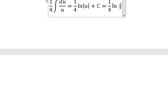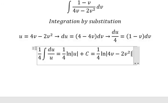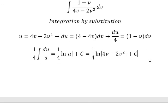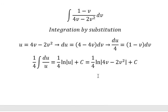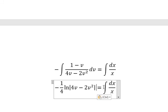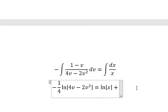For u, that is 4v - 2v². Now we go back here. The integration of this one is (1/4)ln|4v - 2v²|. And this one, we have ln|x| plus c.